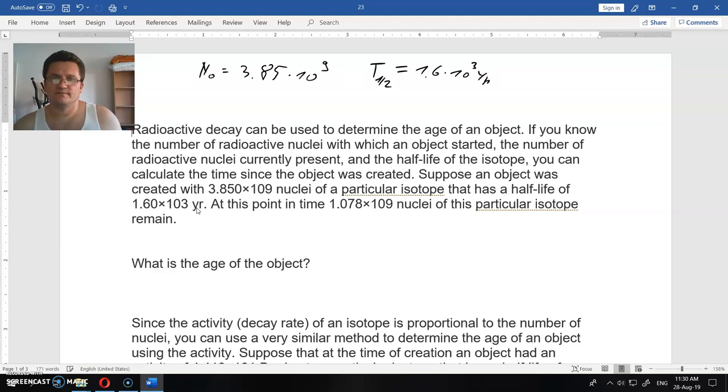Of a particular isotope. At this point in time, 1.078 × 10⁹ nuclei of this particular isotope remain. What is the age of the object?